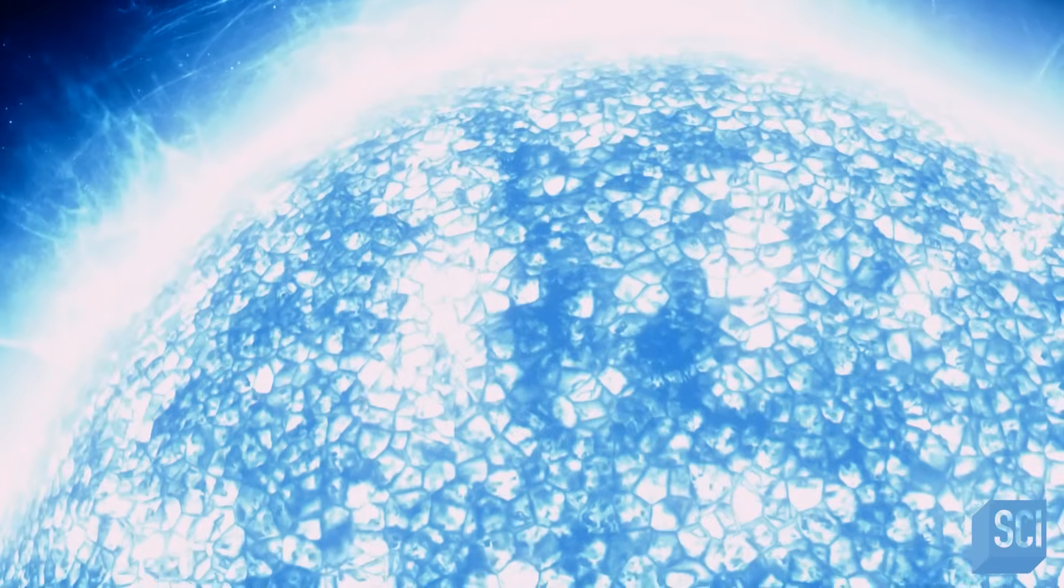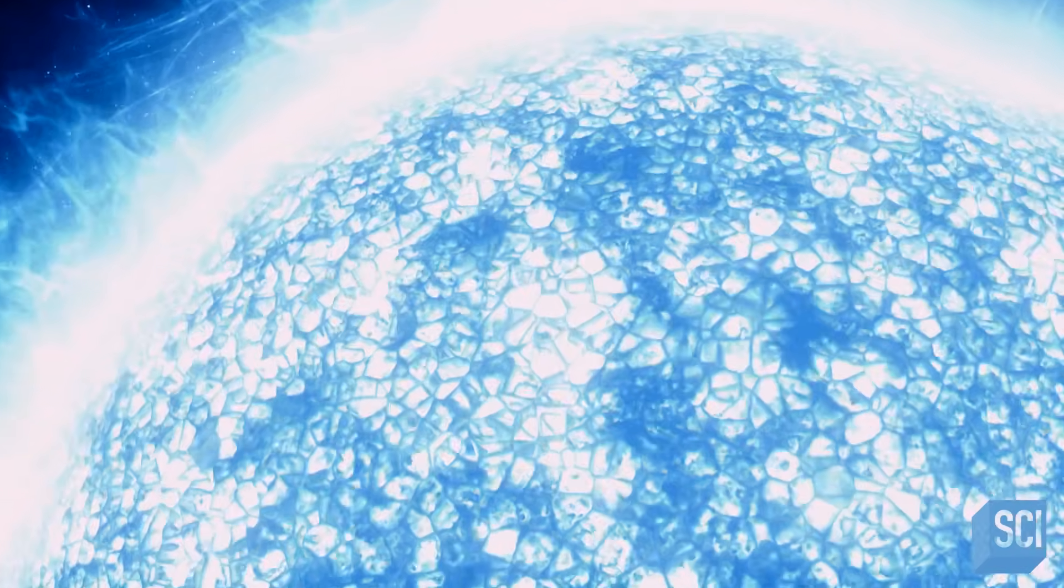The high density means the white dwarf's structure is also strange. It has an extremely thin atmosphere made of hydrogen or occasionally helium gas. If you were to take an Earth skyscraper and put it on a white dwarf star, if you climb to the top of that skyscraper, you'd be outside of the white dwarf's atmosphere. You'd actually be in space.